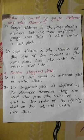Next, define staggered pitch. It is also called alternate pitch or relieved pitch. The staggered pitch is defined as the distance measured along one rivet line from the center of a rivet to the center of the adjoining rivet on the adjacent parallel rivet line.